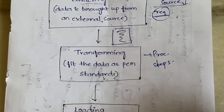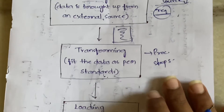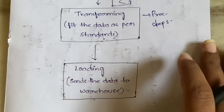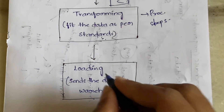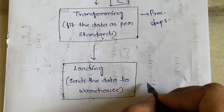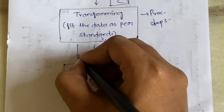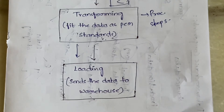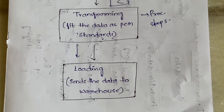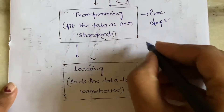After transforming the data into fixed standards, we load the data — we simply send it to the data warehouse. Whatever transformed data we get from the transformation phase, that data is sent into the data warehouse. In the data warehouse, the data will be stored for years and years, and whenever we want to access it we can go there and access it. This is what happens in ETL: Extraction, Transformation, and Load.